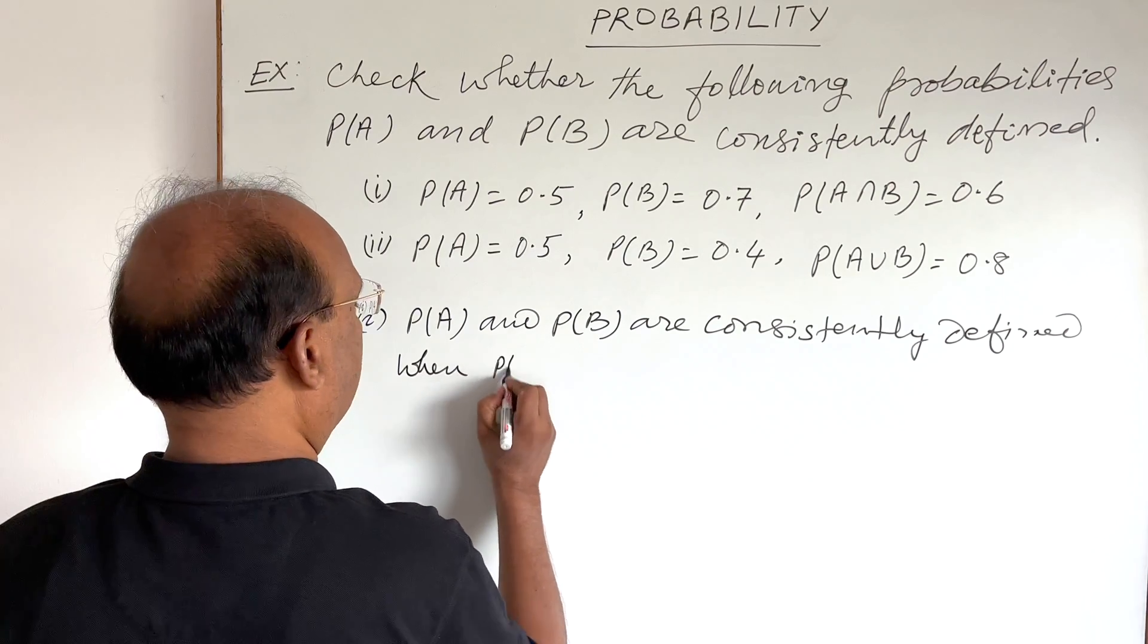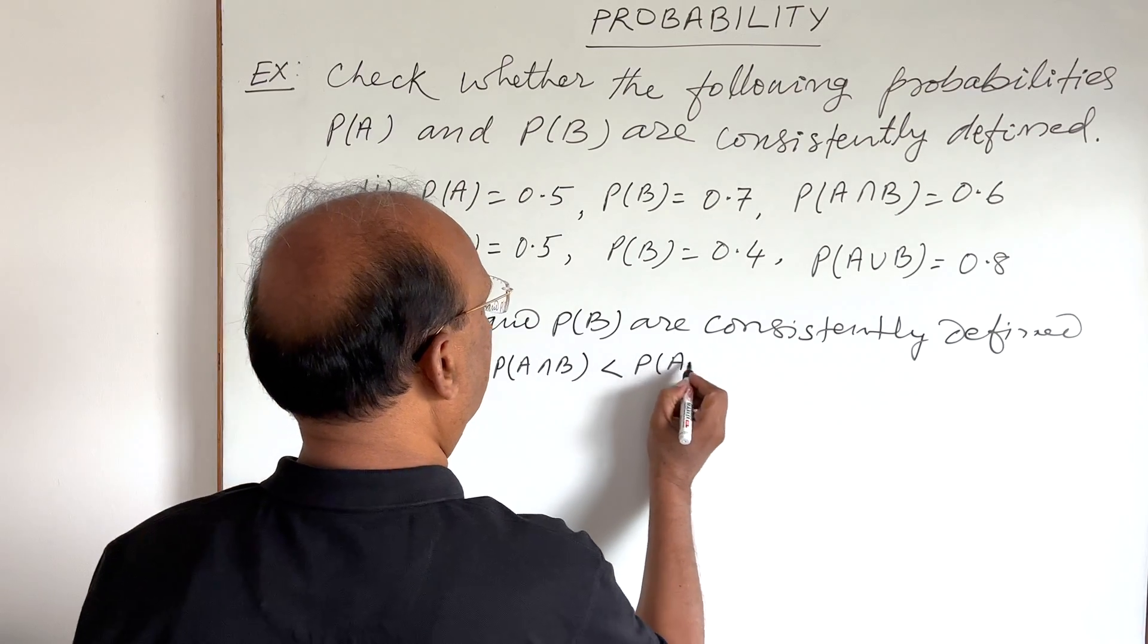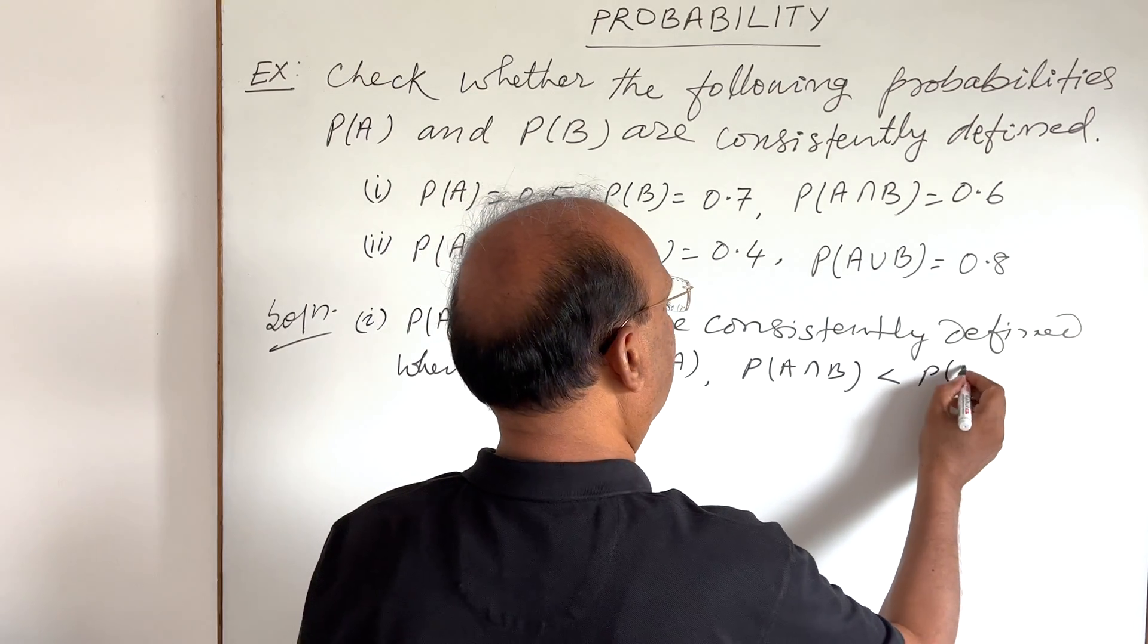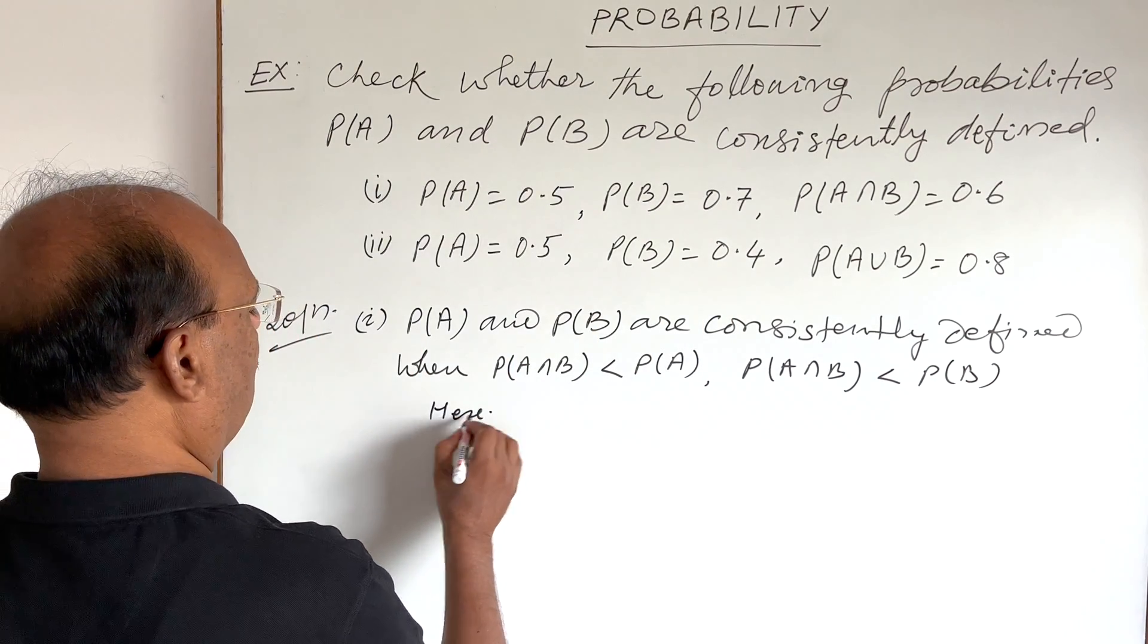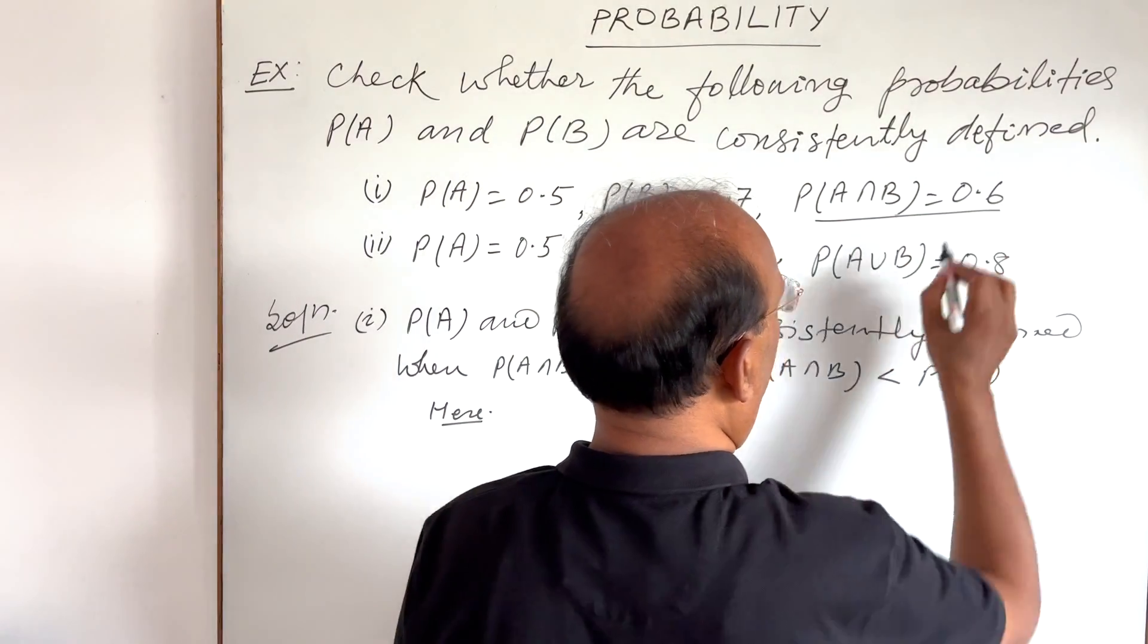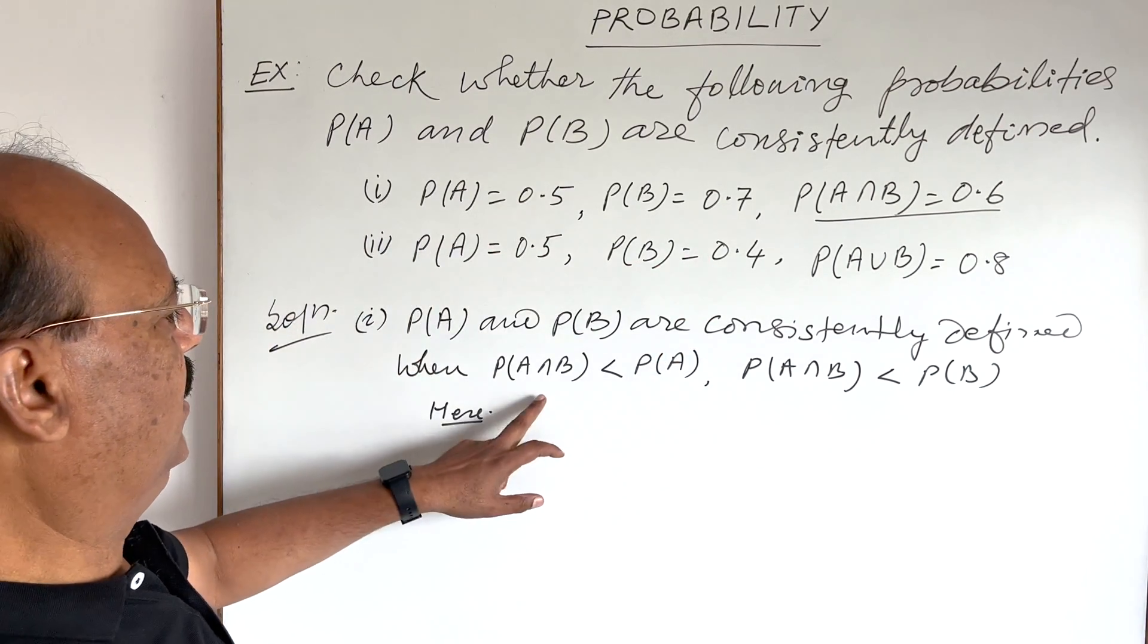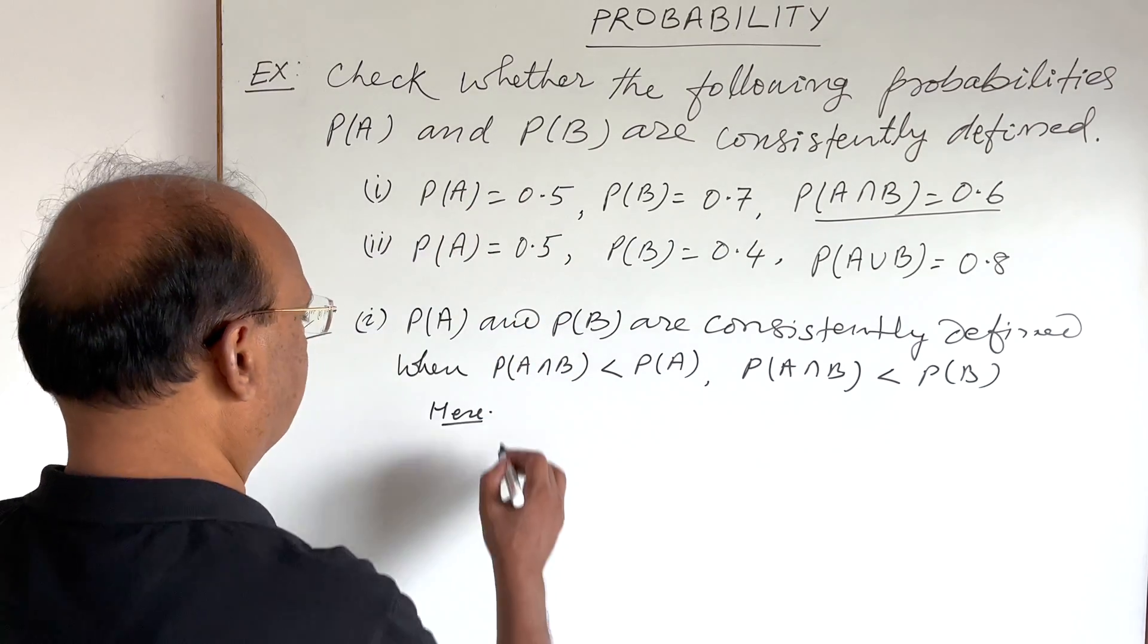When probability of A intersection B, this is less than probability of A, as well as probability of A intersection B, this is less than probability of B also. Here, we are finding that the value of probability of A intersection B is 0.6. So, probability of A intersection B is not less than P(A), which is 0.5.